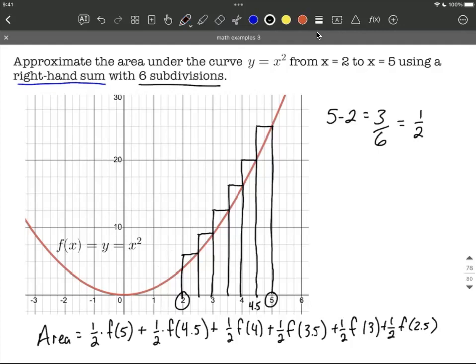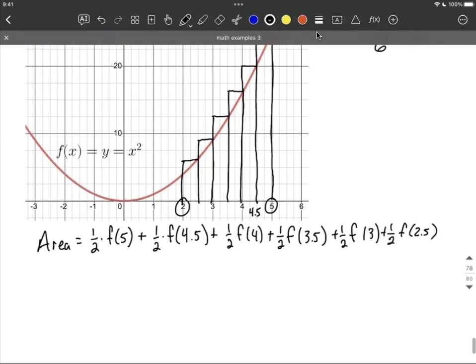Okay, next up let's go ahead and do these calculations. So this area is one half times when we plug five into our function—because our function is x squared—that's going to be five squared. Then one half four and a half squared.